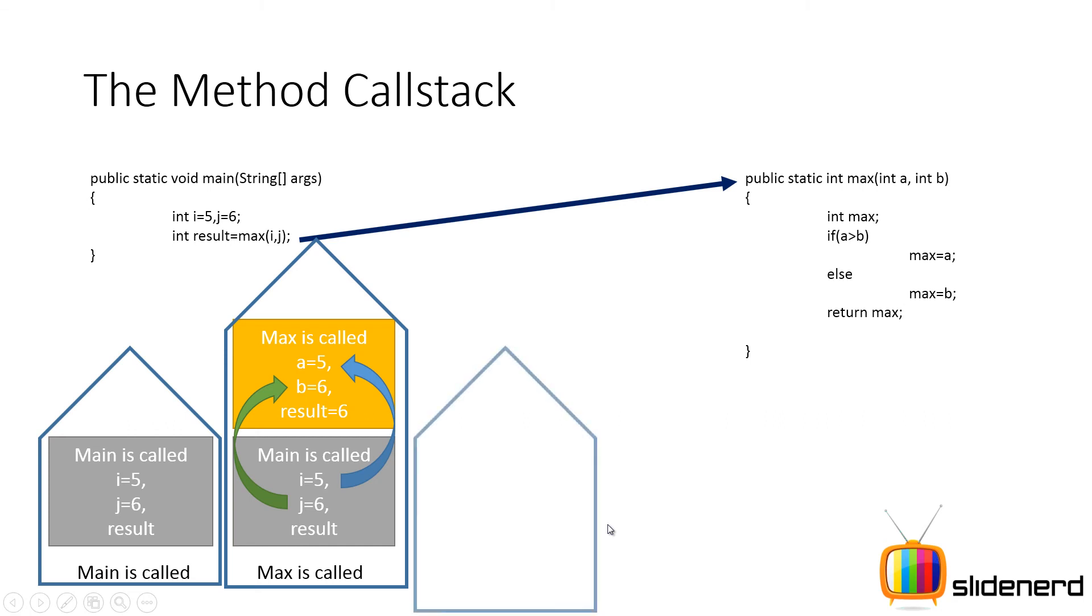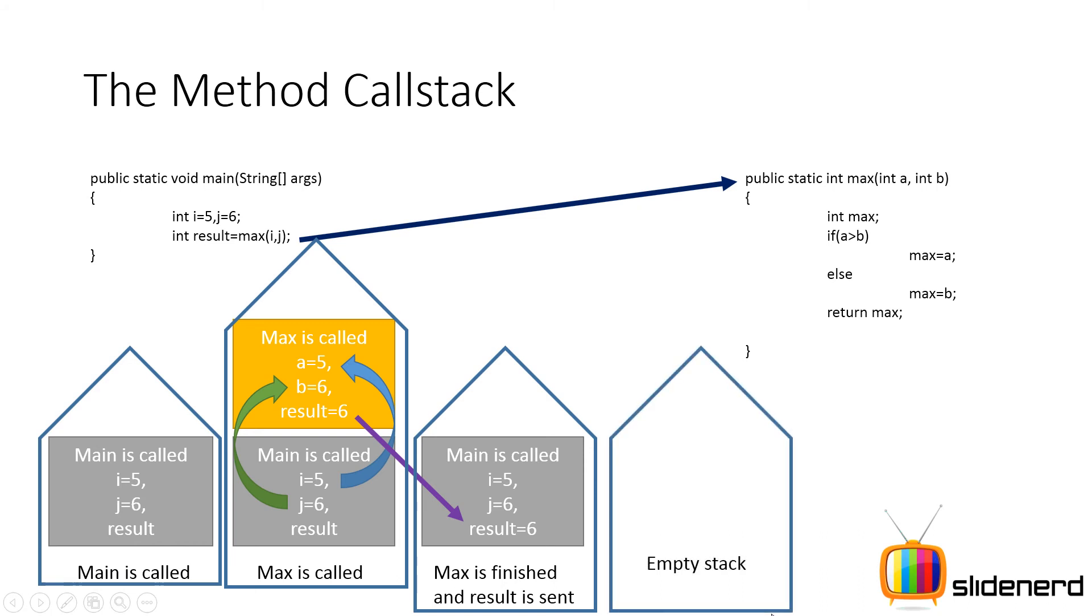And now what happens next is max finished executing, it returns the result, and we are left again with our main. But this time notice the value of result equals 6, which is the greater of 5 and 6, has gone here from max inside main back here. And this time that means our stack is having main at the top, and ultimately our program finishes running, and at that point our stack is completely empty.